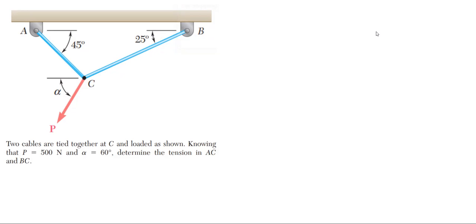We're going to be solving this problem shown on the left here. We have two cables that are tied together at point C and they are loaded with a point load P at an angle. That load P is 500 newtons and that angle is 60 degrees off the horizontal. We are tasked with determining the tension in cable AC and cable BC.